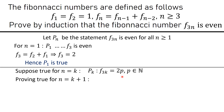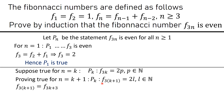The induction step requires us to prove the statement is true for n = k+1. So P(k+1) states that f(3(k+1)) is even, meaning f(3(k+1)) = 2l for some integer l. We compute f(3(k+1)) = f(3k+3).